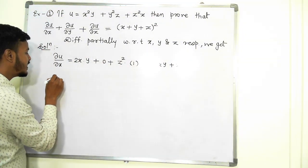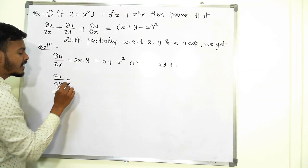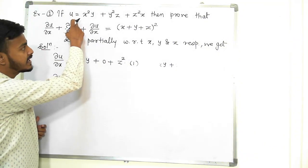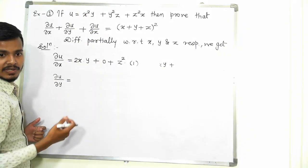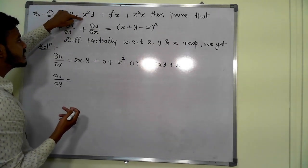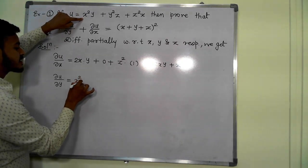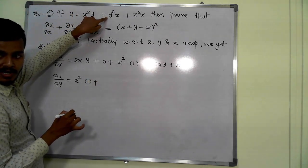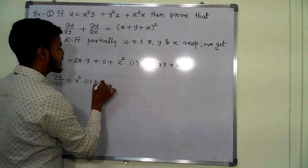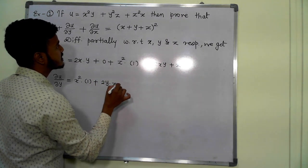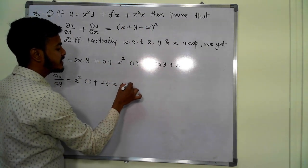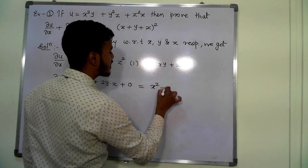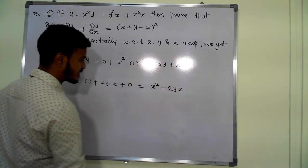Now del u by del y: differentiating u with respect to y, x and z are treated as constants. The term x squared y gives x squared times 1, which is x squared. The term y squared z gives 2y times z, which is 2yz. The term z squared x has no y, so its derivative is 0. Therefore del u by del y equals x squared plus 2yz.